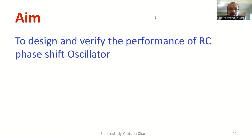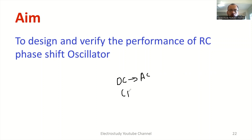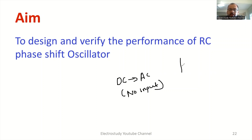First of all, I will ask one question: what is an oscillator? An oscillator is basically a DC to AC converter — a DC to AC converter where no input is provided. You cannot see any input in an oscillator, and the output of the RC phase shift oscillator will be a sinusoidal waveform only.